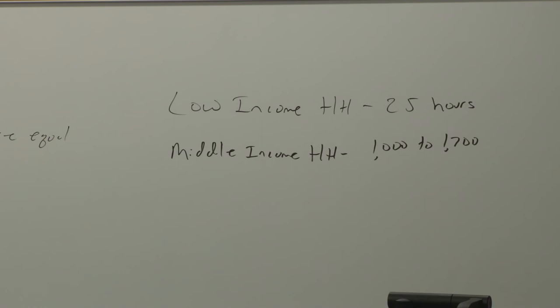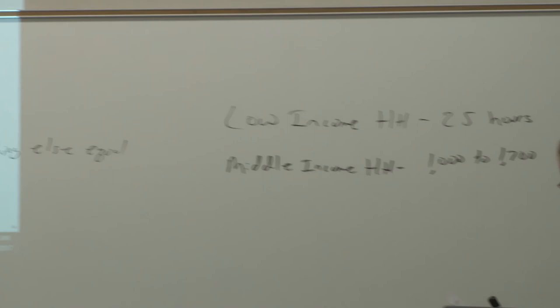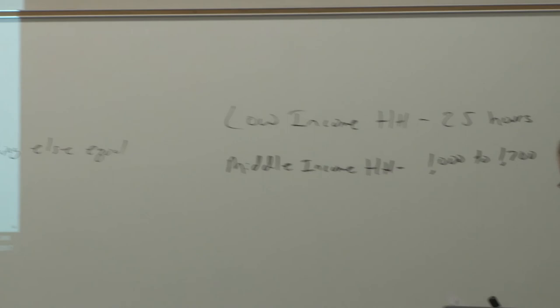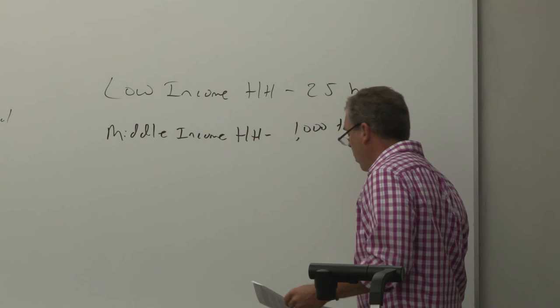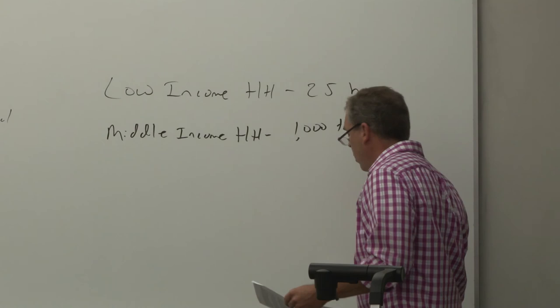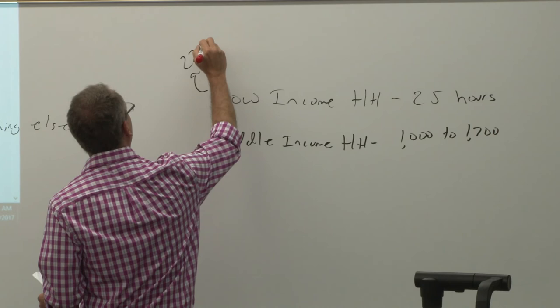These oft-repeated numbers originated in a 1990 book by Marilyn Adams titled, Beginning to Read, Thinking About Learning in Print. Mrs. Adams got the 25-hour estimate from a study that she did of 24 children in 22 low-income households. So, you say to yourself, where does this number come from? 22 households. For the middle-income figures, she extrapolated from the experience of a single child, her then four-year-old son, John.